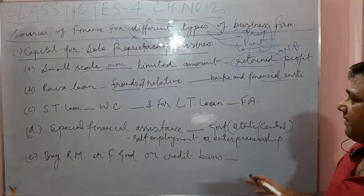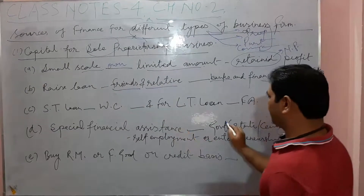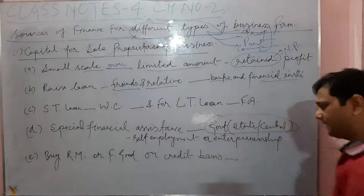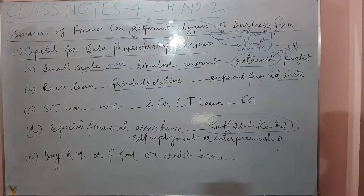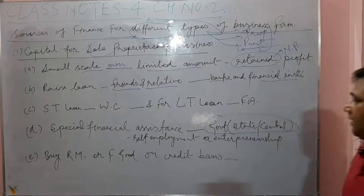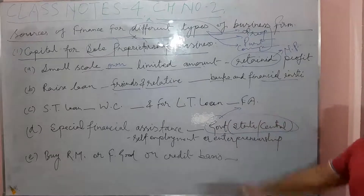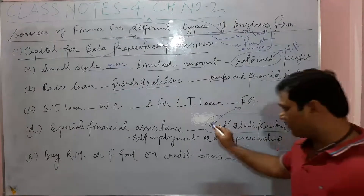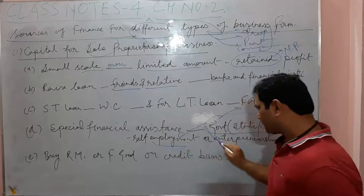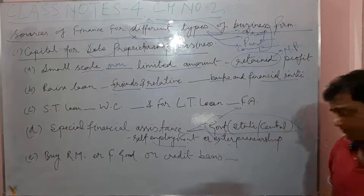There is also special financial assistance requirement. Sole proprietorship businesses get special financial assistance. Who gives it? The government gives it — the central government also provides financial assistance. The objective of the government in providing financial assistance to sole proprietorship businesses is to promote self-employment and to increase entrepreneurship.